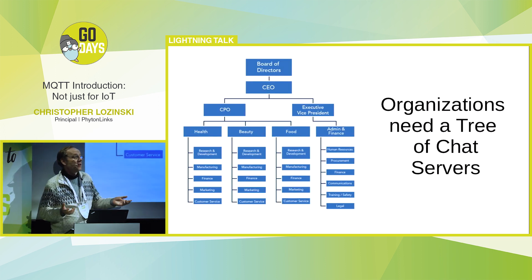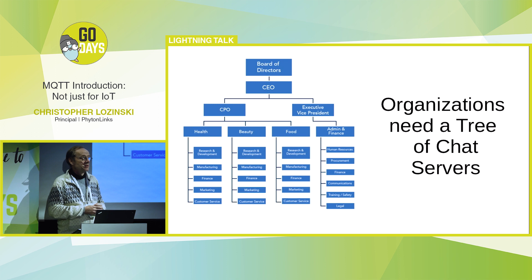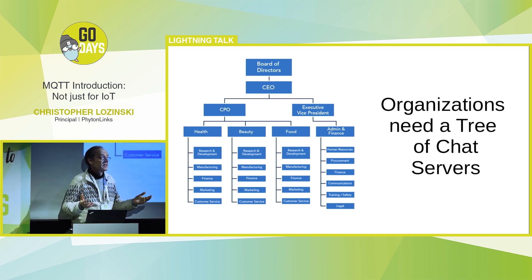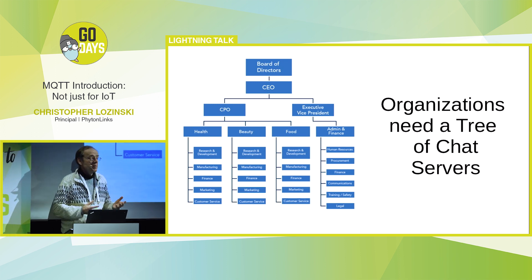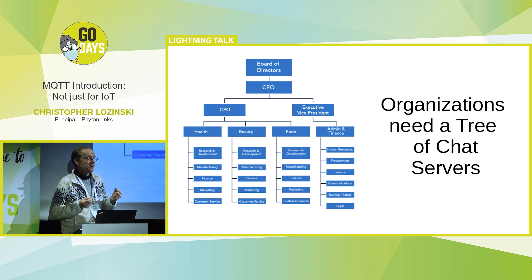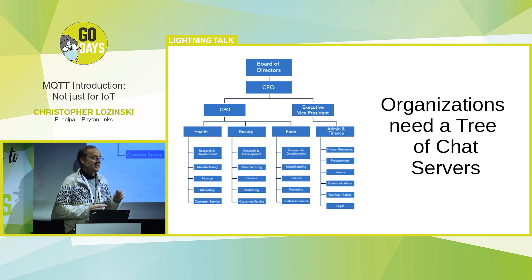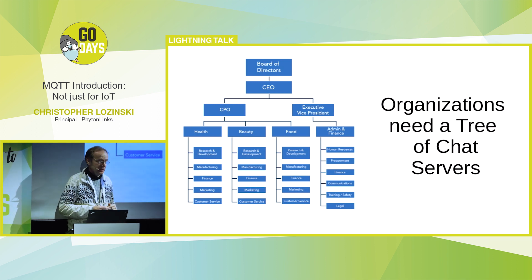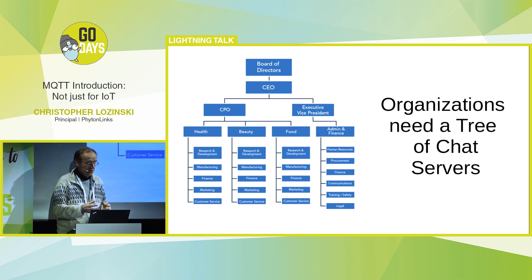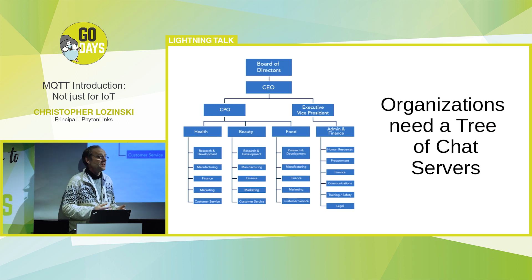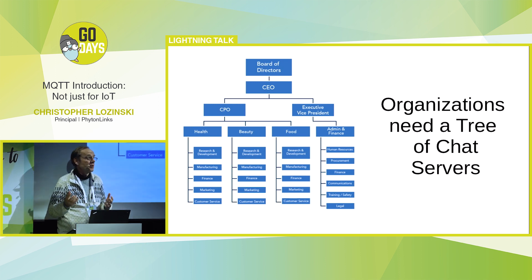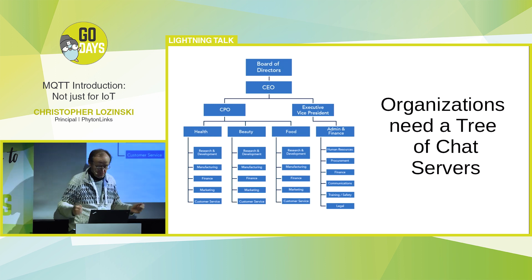The big use case is organizations. Organizations have org charts, and many of them use Slack for chat. But Slack just gives you a list of channels — maybe it gives you a thread within that, but it's tricky to use. You really want every group in an organization to have their own chat room. MQTT works great for that because it makes a tree of chat rooms almost trivial.